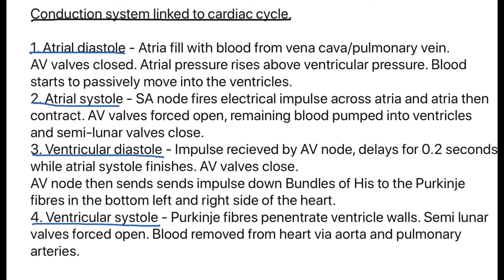The third step is ventricular diastole. The impulse is received from the SA node by the AV node, which delays it for 0.2 seconds while waiting for atrial systole to finish. The atrioventricular valves then close. The AV node sends the impulse down the bundle of His in the centre of the heart to the Purkinje fibres at the bottom left and right of the heart. The final step is ventricular systole: the Purkinje fibres penetrate the ventricular walls with the electrical impulse, causing them to contract from the bottom up. The semilunar valves are forced open and blood leaves the heart via the aorta to the body and the pulmonary arteries to the lungs.